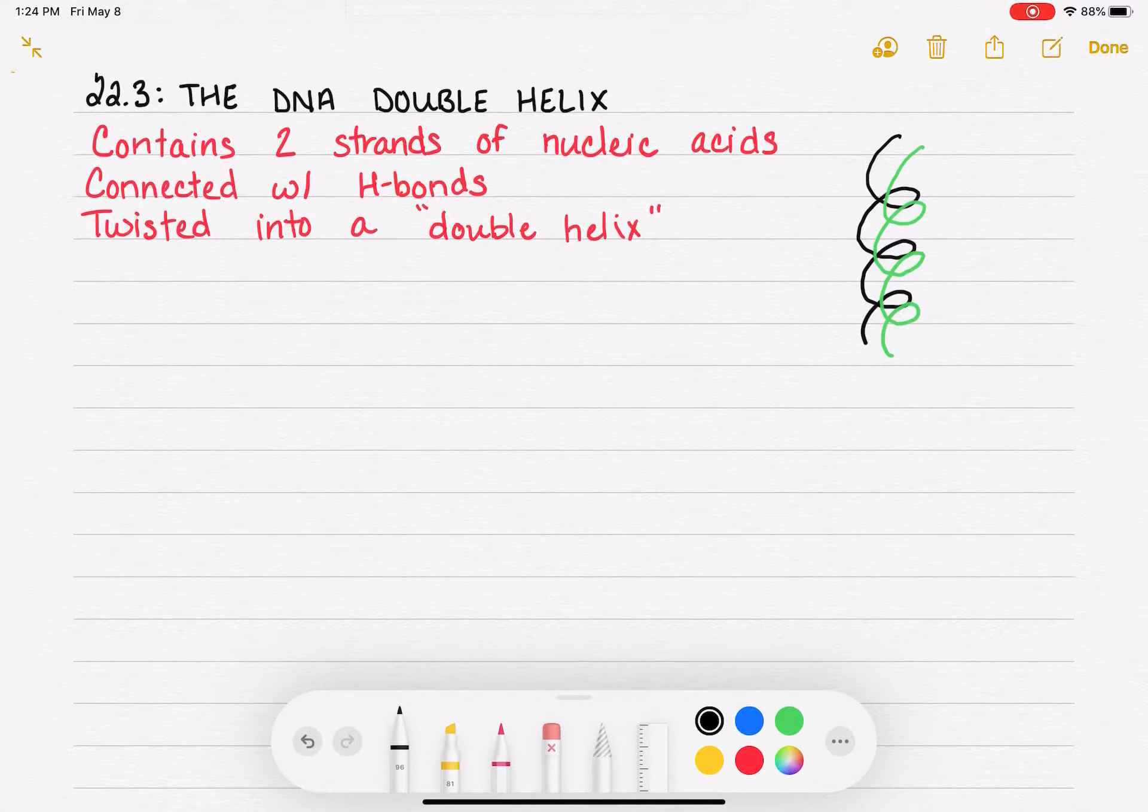The hydrogen bonding that holds these two strands together only exists between specific base pairs, which is what we refer to as complementary base pairing.